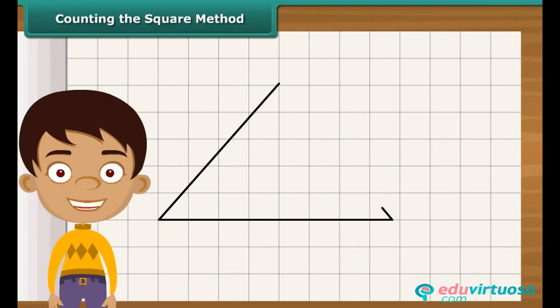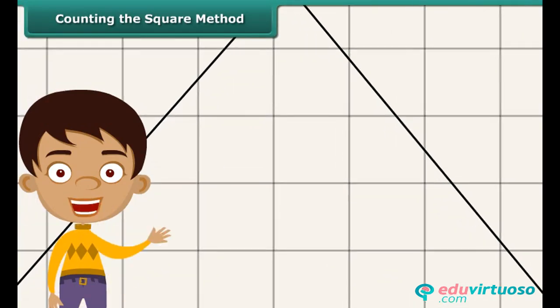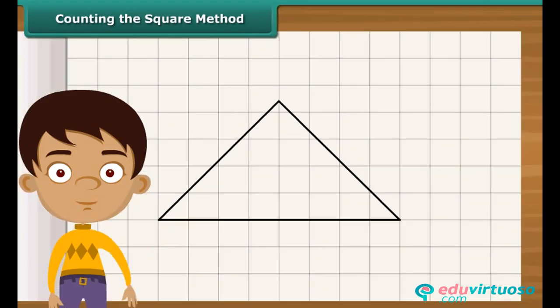Draw the triangle on the squared paper. Each square has a size of one centimeter. First, count the complete squares enclosed by the triangle.